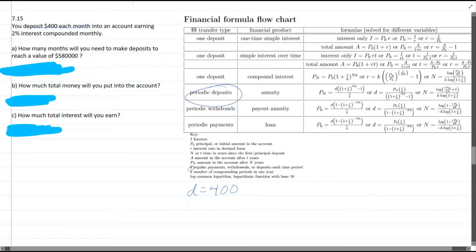We know that the deposit D is $400. Now it's monthly, so right away I know the compounding periods K is 12. That's the number of compounding periods in a year.